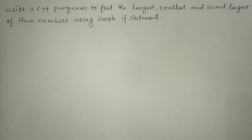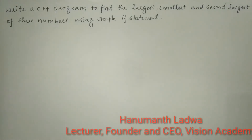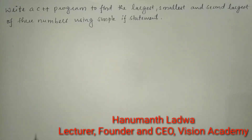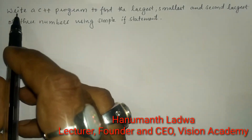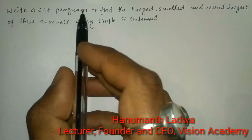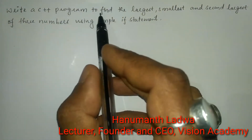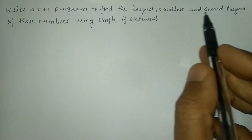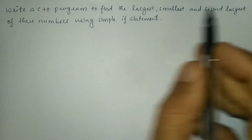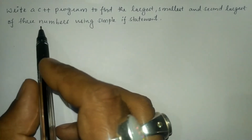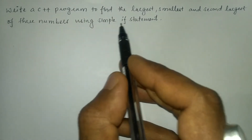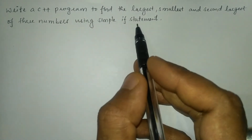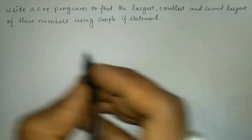Hello and welcome to Vision Academy. My name is Hanman Ladwa and in this video we are going to write a C++ program to find the largest, smallest, and second largest of three numbers using simple if statements.